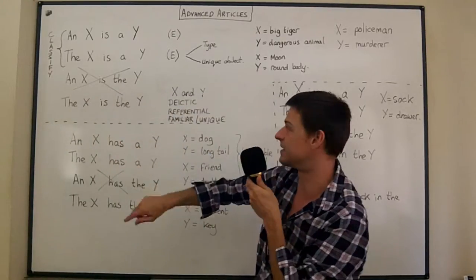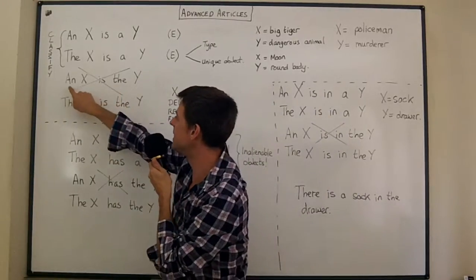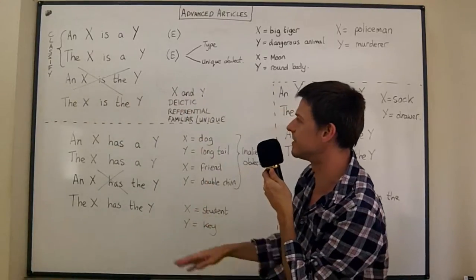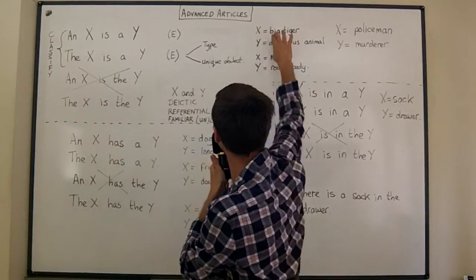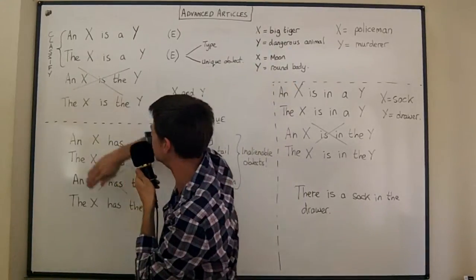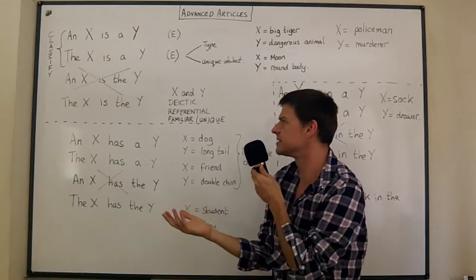So again for both of these two I hope you realize that that's pretty much not acceptable either. Although it is possible generally, this one's impossible. A big tiger is the dangerous animal - impossible again. But still for these two please notice that that one's not really correct or it's very rare that you would say that.